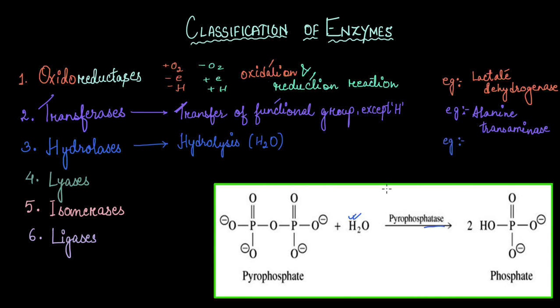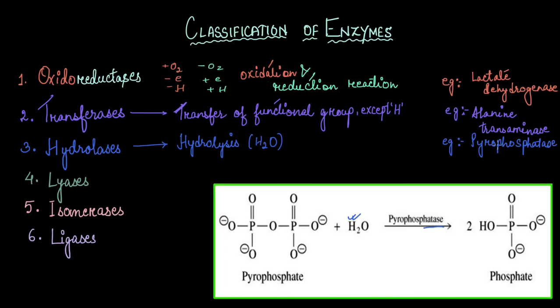The enzyme catalyzing it is called pyrophosphatase. An example of hydrolase would be pyrophosphatase. There are abundant hydrolases in the biological system. Any enzyme that breaks down a peptide bond we call peptidases. If it breaks down the ester bond in lipids we call them lipases. If it is breaking down the glycosidic bond in amylose we call them amylases. All those come under the hydrolases class of enzymes.